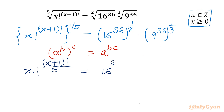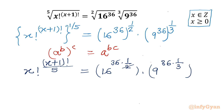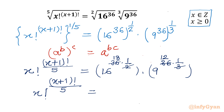Now we can multiply both the exponents as per the property. We can cancel 2 and 36 by writing 18, and 3 and 36 by writing 12. So this will become x factorial raised to the power x plus 1 factorial over 5, equal to 16 power 18 times 9 power 12.